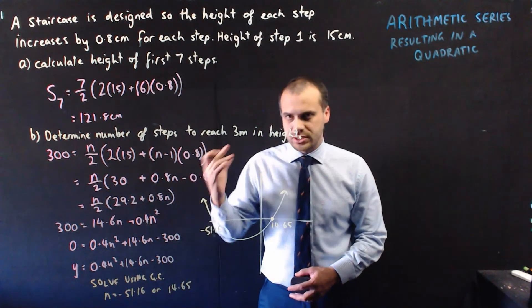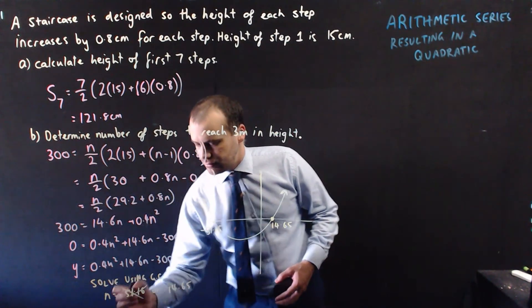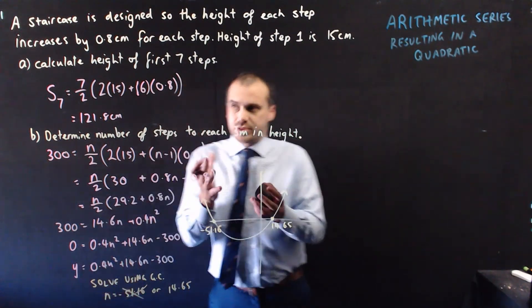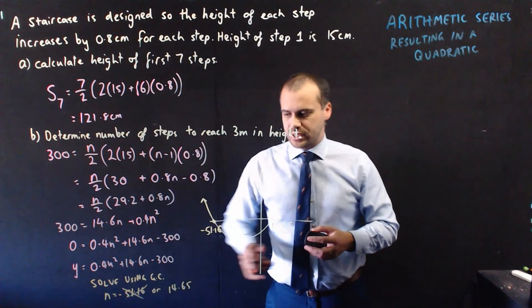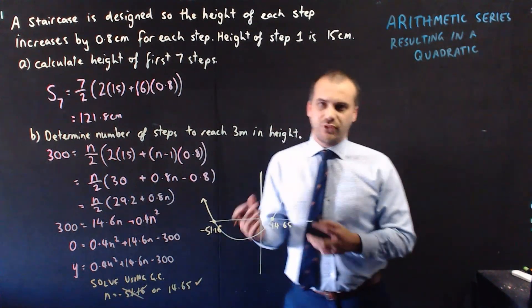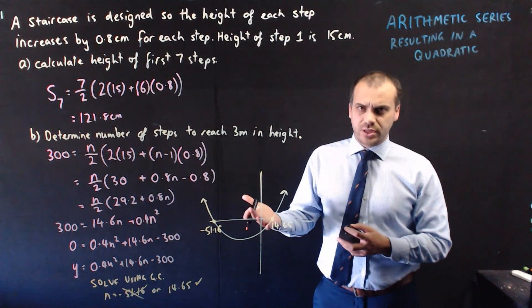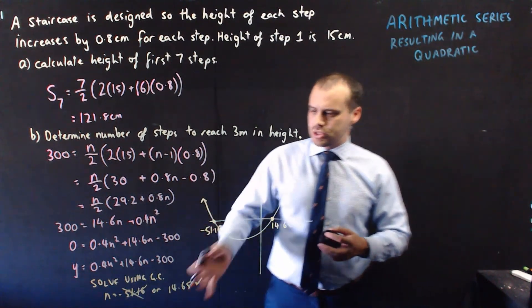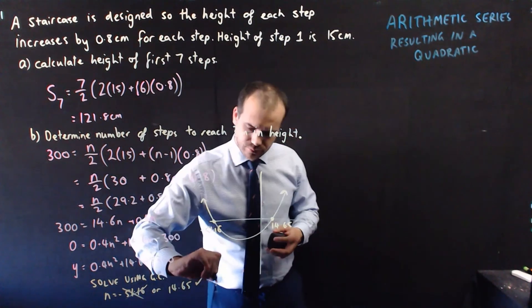we're going to reject the negative answer, for obvious reasons, positive steps, we can write that down there. So, our answer is 14.65, but, obviously, we can't have half of a step, so we're going to have to round that up.